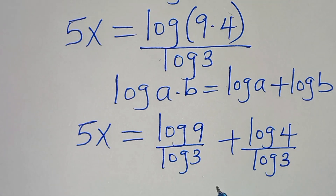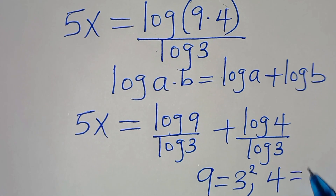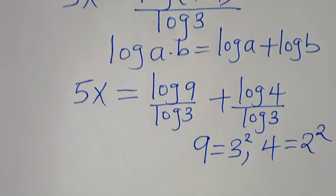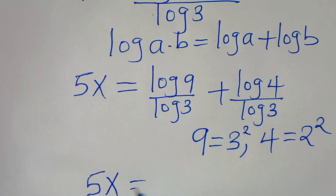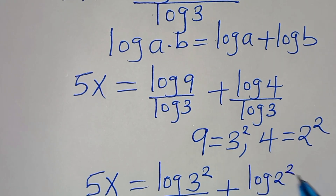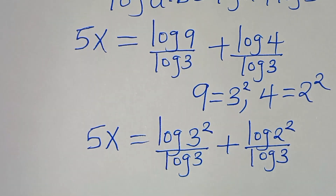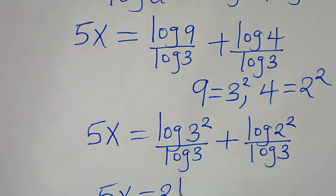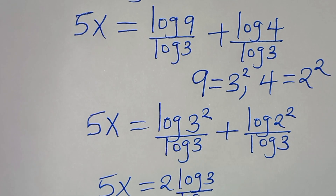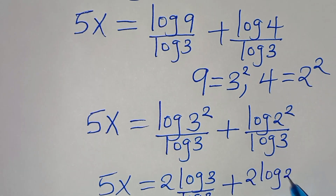We express 9 as 3 squared and 4 as 2 squared. Substituting, we have 5x equals log(3²) divided by log 3, plus log(2²) divided by log 3. Applying the power rule, log(3²) becomes 2·log 3, divided by log 3, plus log(2²) becomes 2·log 2, divided by log 3.